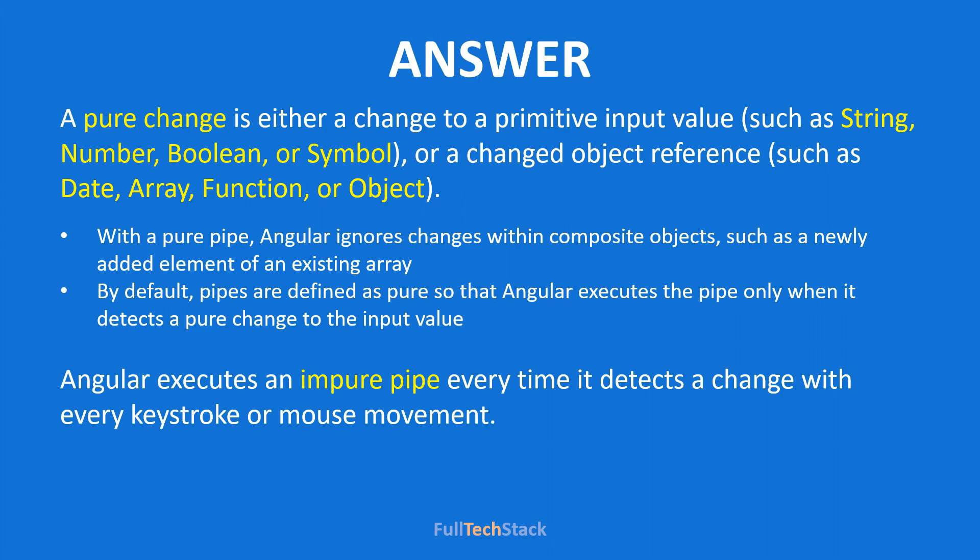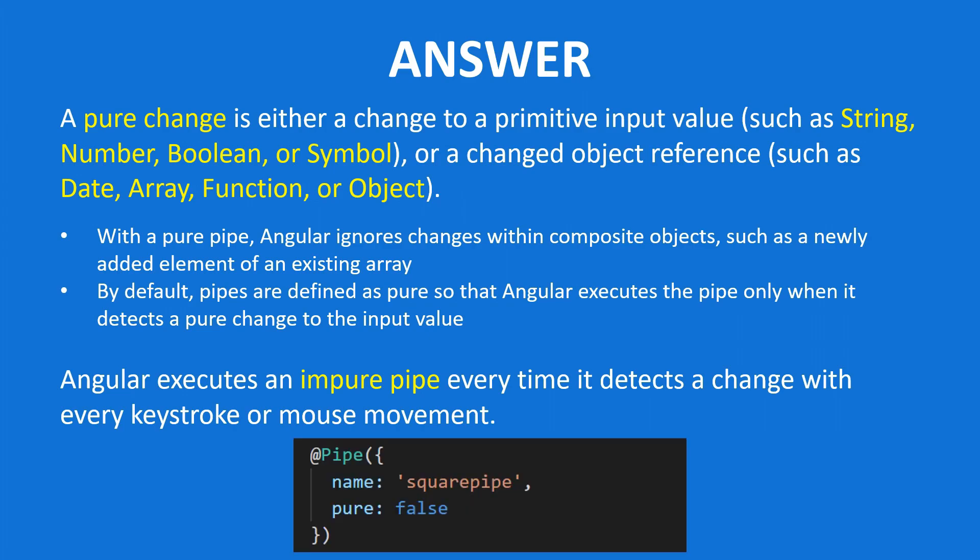Understanding pure and impure pipes is now quite easier. Angular executes a pure pipe only when a pure change is detected. Note that by default all pipes in Angular are pure. An impure pipe is executed when impure changes are detected, and to make a pipe impure we can add the pure property in the pipe decorator as false.